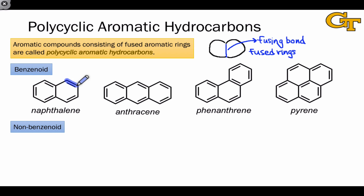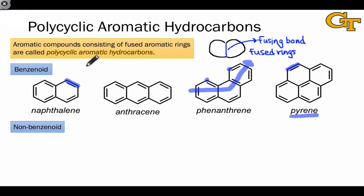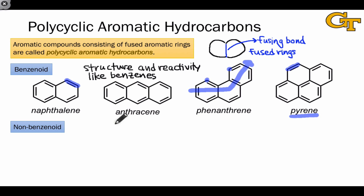Fusing in an angular fashion leads to a molecule containing three benzene rings fused at an angle, and this molecule is an isomer called phenanthrene. Introducing another ring into phenanthrene by adding two carbons results in the molecule pyrene. All four of these molecules have structures and reactivity that resemble benzene, indicating that they're aromatic. For example, they don't undergo addition chemistry in the presence of electrophiles, instead opting for substitution, just like benzene.